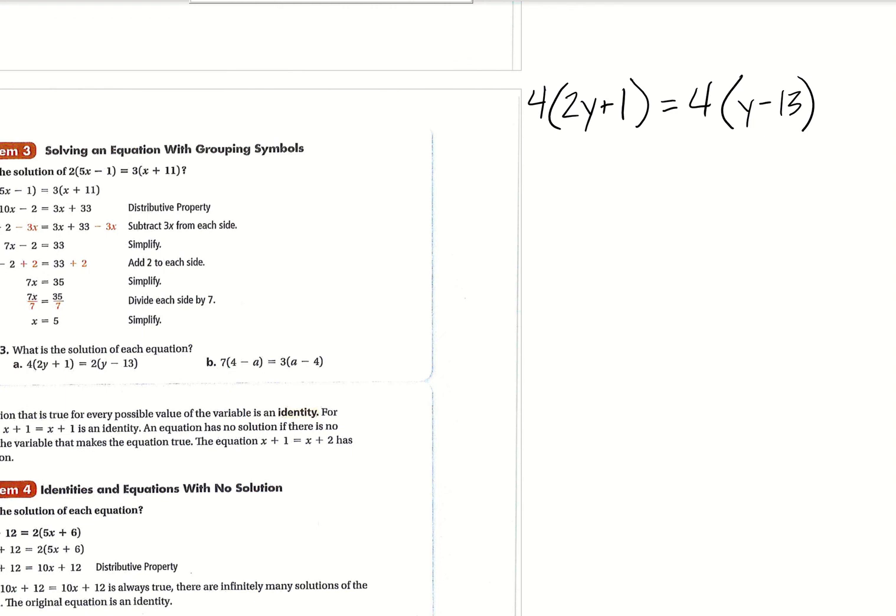Okay. So I said I would show you 3a, I actually changed the problem slightly. And this is just sort of to show if you have something like this, there's a much quicker way of doing it. Right. So if you were just with this to divide both sides by four, that's going to cancel all of that. So now you're just left with two Y plus one equals Y minus 13.